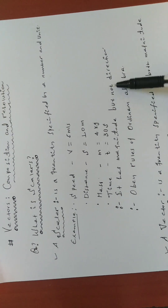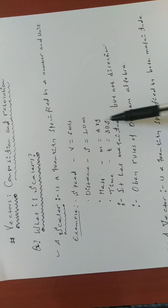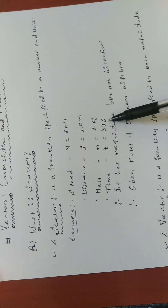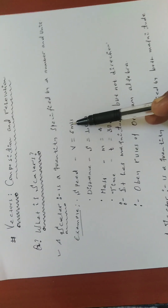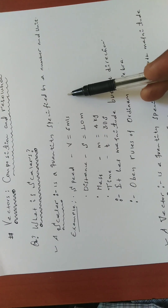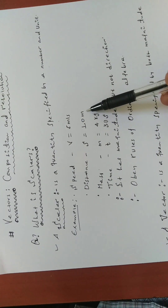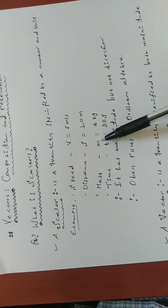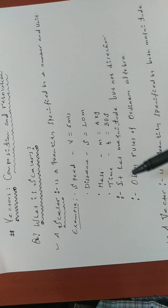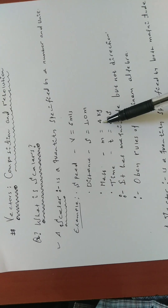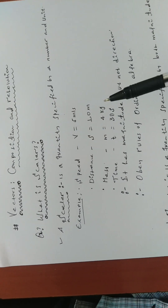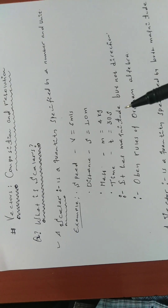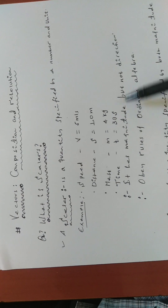So a scalar is defined as a quantity specified by a number and a unit. A scalar has magnitude but no direction. For example, speed — five meters per second — to which direction? Distance — 10 meters — no direction. Mass — four kilograms — no direction. Time — 30 seconds — no direction. So a scalar has magnitude but no direction.